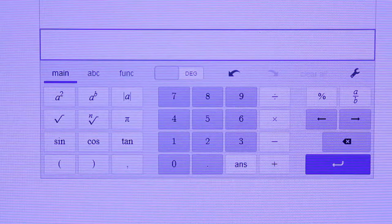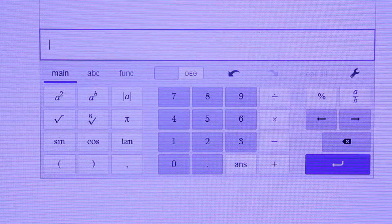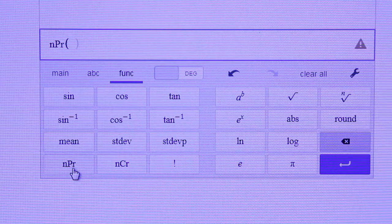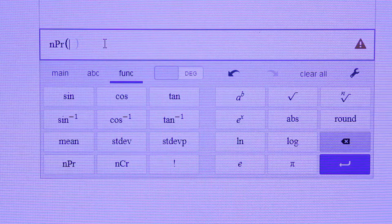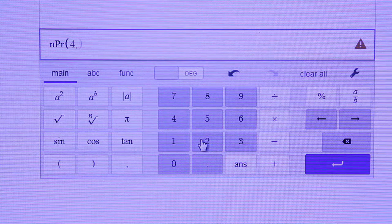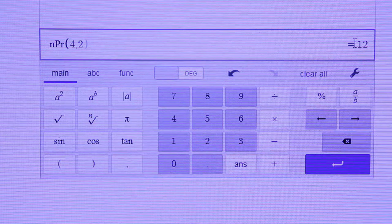I'm going to show you how to use desmos.com slash scientific to find out permutations and combinations. So, the first problem was a permutation. What you want to do is hit function. And then look for the NPR button. And then the way it works is you're going to put both numbers in parentheses separated by a comma. So, the total objects was 4. We go to main and we hit 4. Then we hit comma. And then it was an arrangement size of 2. And you can see the answer is 12 right over there.